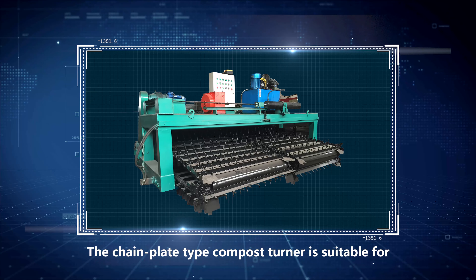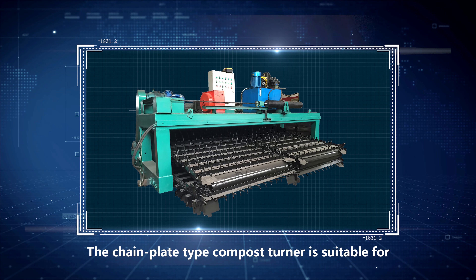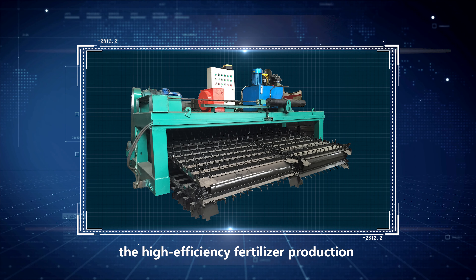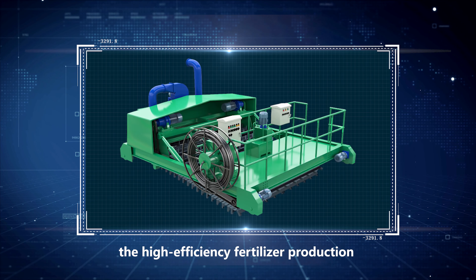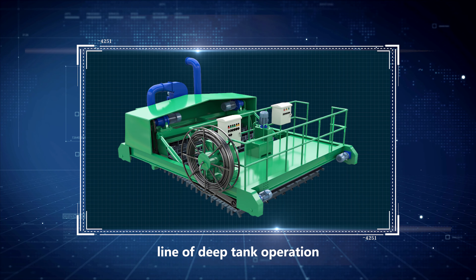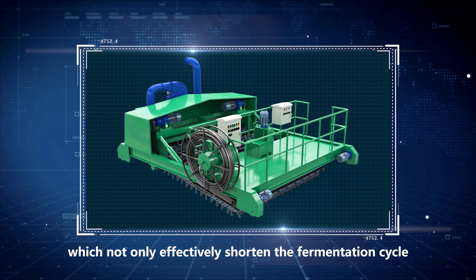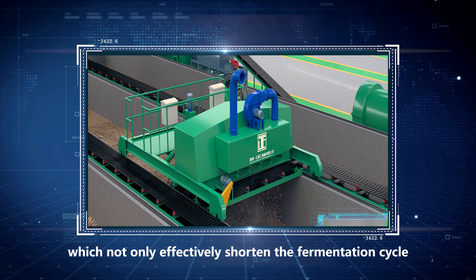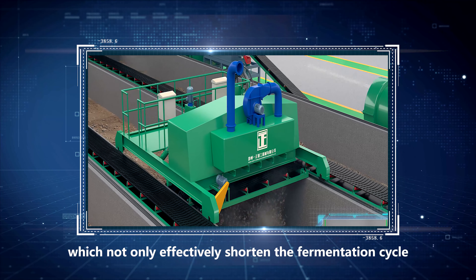The chain plate type compost turner is suitable for the high-efficiency fertilizer production line or deep tank operation, which not only effectively shortens the fermentation cycle, but also achieves large-scale sequential production.